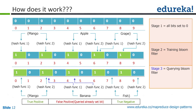Banana is not part of the actual dataset — the actual dataset has only mango, apple, and grape. I trained with only mango, apple, and grape, but when I give banana it still says false positive because banana falls under the same indexes as mango, apple, and grape. There are only two ways to improve how the bloom filter performs: either add more hash functions, which provides a better result but gets a little bit slower, or adjust the false positive percentage.